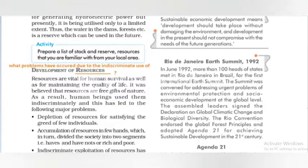The first question is: what problems have occurred due to the indiscriminate use of resources? First, resources are depleted. Second, there is accumulation of resources — some people have resources while others do not, which is why social divisions are happening in society between poor and rich. Third, indiscriminate use of resources has led to global warming and pollution.